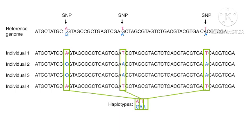Instead of A, individuals 2 and 3 have G. Instead of T, they have the A nucleotide, and instead of T again, they also have A. So individuals 2 and 3 have three single nucleotide polymorphisms which are inherited together as a single block — this can be termed as a haplotype. Whereas individuals 1 and 4 have the normal DNA sequence, retaining A at that position.